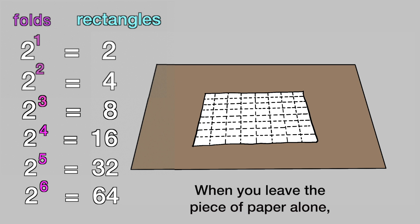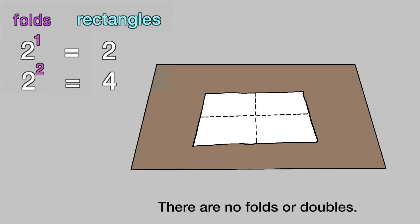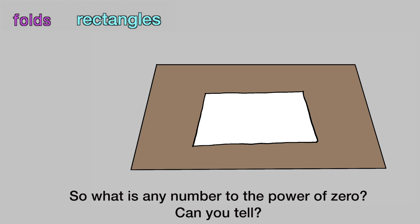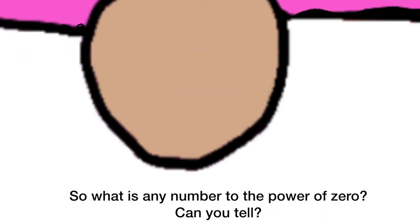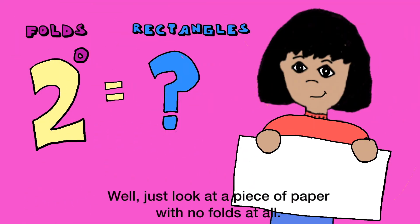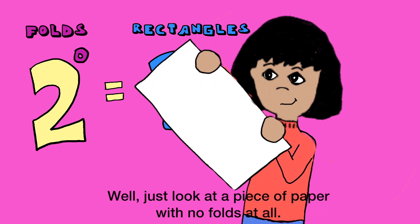When you leave a piece of paper alone, there are no folds or doubles. So what is any number to the power of zero? Can you tell? Well, just look at a piece of paper with no folds at all.